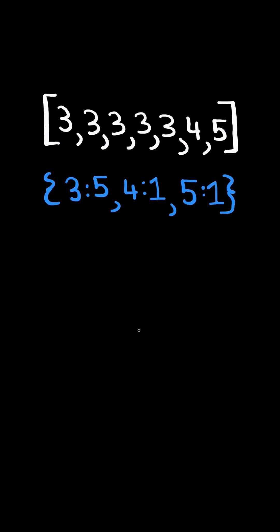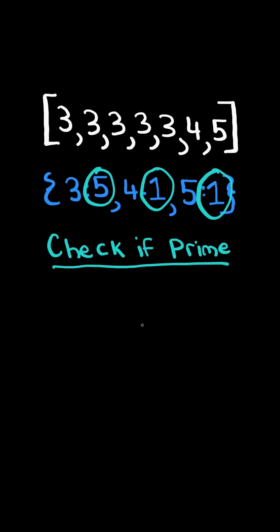Consider this example. First, we will create a frequency map. We then iterate through the values of the map, and for each value, we will check if it's prime.